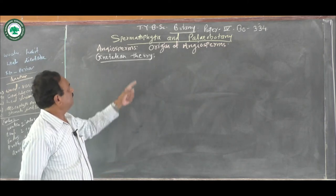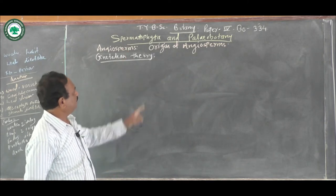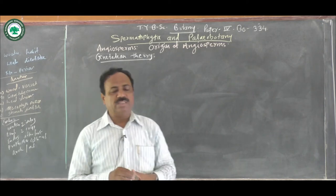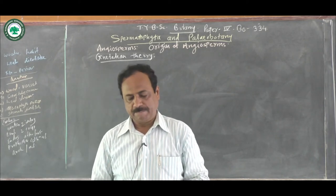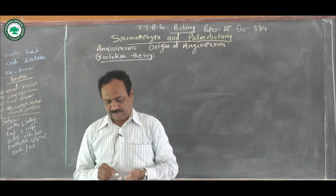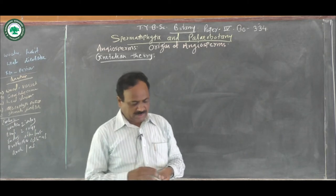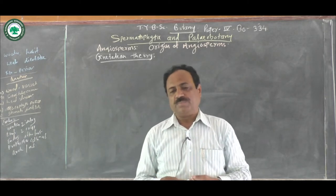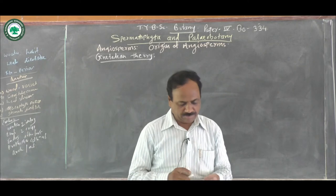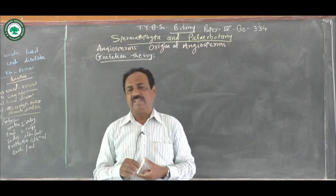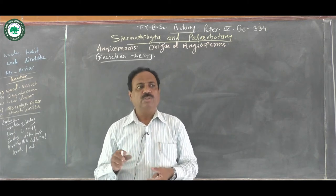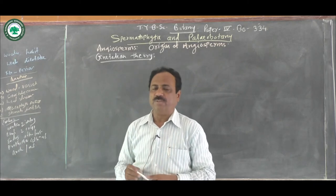In that, the part of the Spermatophyta, that is the angiosperms — the topic is the origin of angiosperms. Regarding the origin of angiosperms, as far as concerned its time, scale and origin, it is very difficult to mention the exact time, exact place, and also the exact ancestors of the angiosperms.